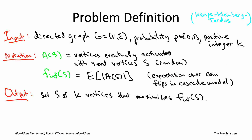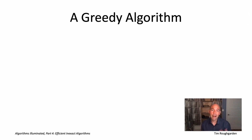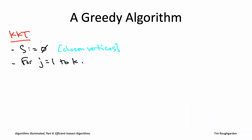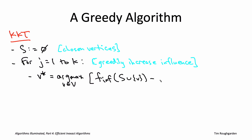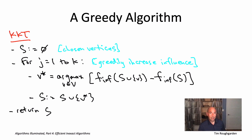Yes, there is such an algorithm, and again it will be a natural greedy algorithm. The greedy algorithm looks very similar to the one we saw for the maximum coverage problem. There are again K things to choose — K vertices — picked one by one. We don't care about coverage; we care about influence. But again, in each iteration of the greedy algorithm we're myopic: we pick the vertex that increases the current influence as much as possible. That is the KKT algorithm for influence maximization, and it is the one we will be analyzing in the rest of this video.